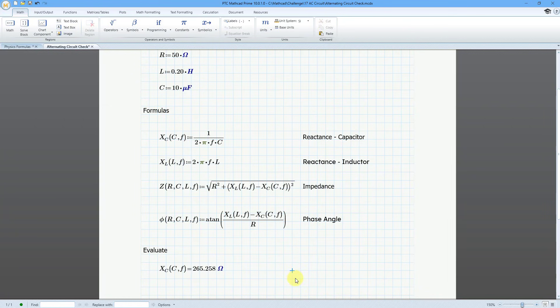Let me just position over here and do the same thing for the inductor. X, control minus L. And we're going to pass the values for L and F. And then hit the equal sign. We've got that value.